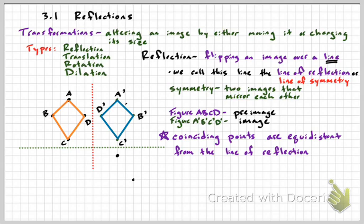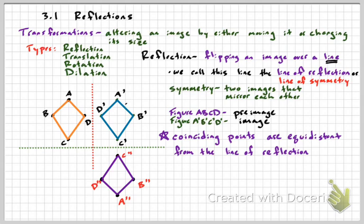The points have to be equidistant from the line of reflection. I'm reflecting the blue figure over the green dotted line. B prime is four units above the green line, and B double prime is four units below. When you're reflecting across horizontal and vertical lines, it's really easy because you can just count it out.